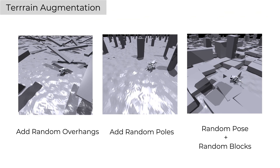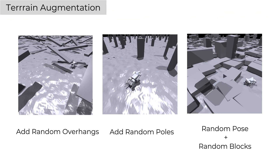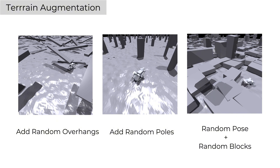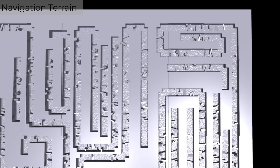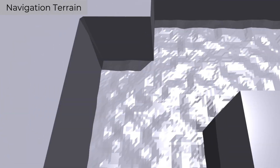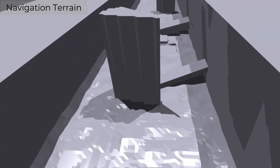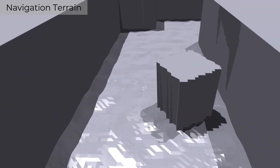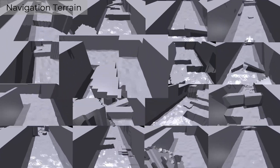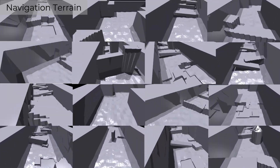To enhance policy robustness against out-of-distribution scenarios, we randomize obstacle positions, postures, and sizes, and add multiple high walls, poles, and overhanging blocks. We train the local navigation policy on procedurally generated terrains, featuring path sections flanked by tall walls and clustered obstacles of varied types and sizes.